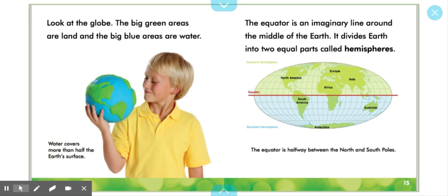The equator is an imaginary line around the middle of the Earth. It divides Earth into two equal parts called hemispheres. The equator is halfway between the north and south poles.